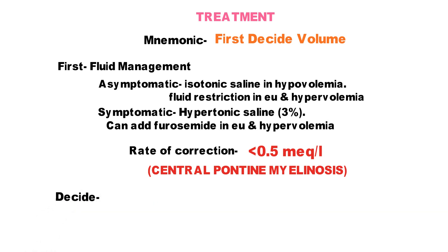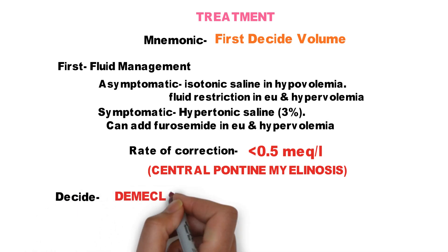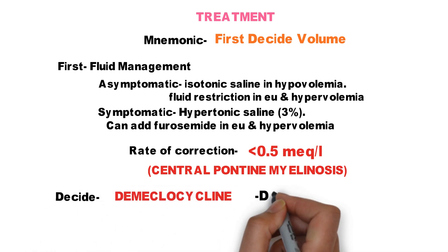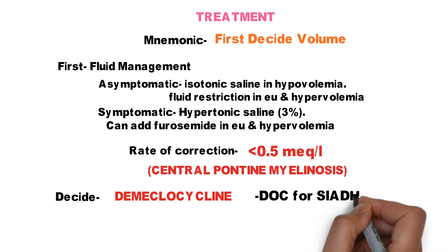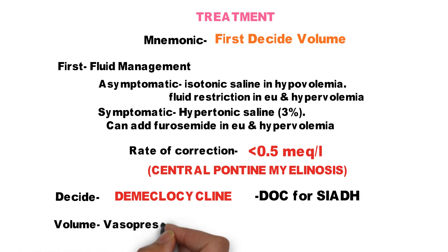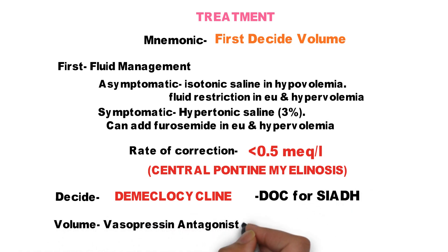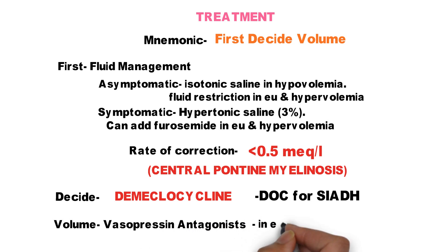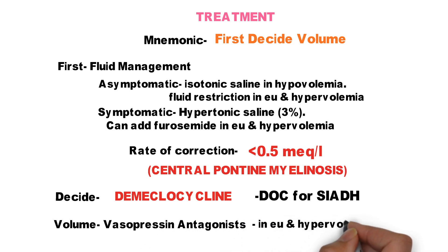In the mnemonic, Decide stands for demeclocycline, which is also the drug of choice for SIADH — a frequently asked question. Volume stands for vasopressin antagonists like tolvaptan and conivaptan, which are used in euvolemic and hypervolemic states.